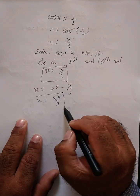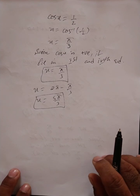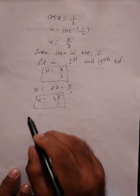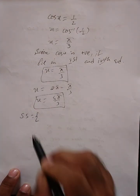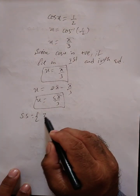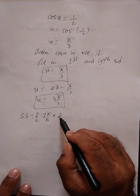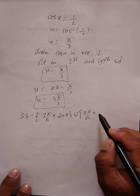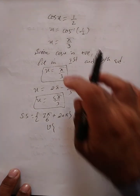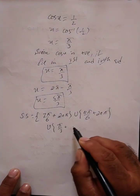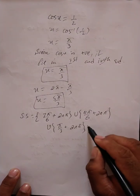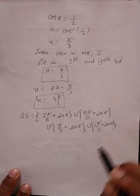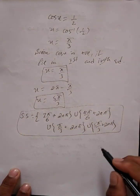We have found all the angles for sin x and cos x. The general period of sin x and cos x is 2nπ, so we write the general solution directly. For sine: 7pi/6 + 2nπ union 11pi/6 + 2nπ. For cosine: pi/3 + 2nπ union 5pi/3 + 2nπ. This is the final answer for Question 10.